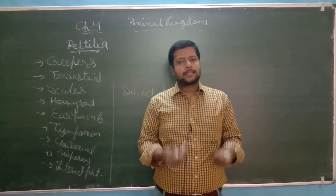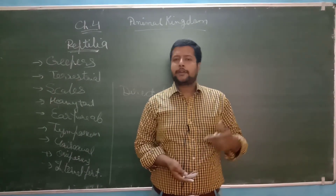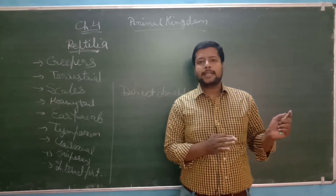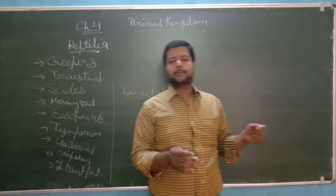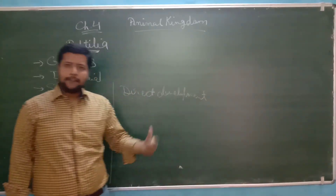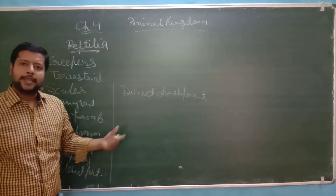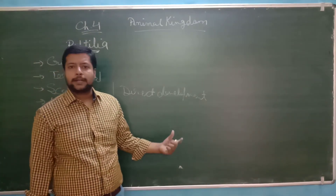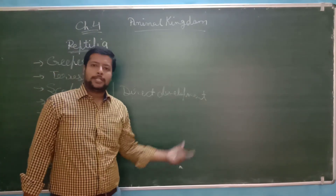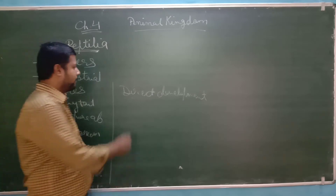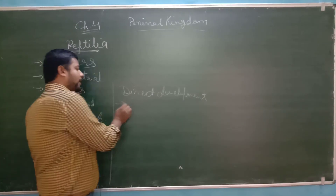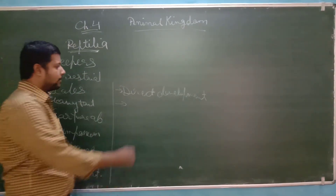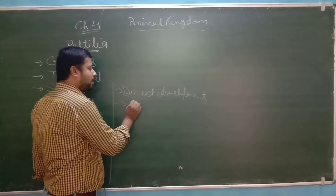Some additional characters: Coelomate, Bilaterally Symmetrical, Triploblastic — these three characters are common and continue across groups. One important character is that Reptilia have a three-chambered heart — incomplete, with some exceptions.